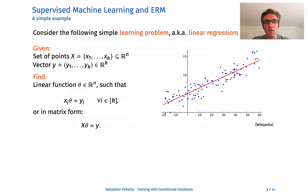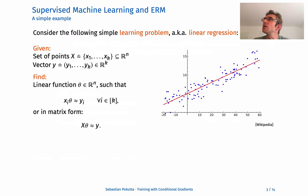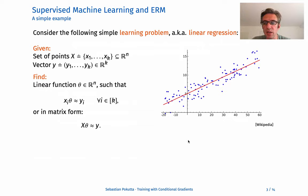Let's start with a very simple example in the context of supervised machine learning and empirical risk minimization. We consider a simple linear regression problem. Linear regression: given a set of points and certain response variables, we want to find a linear model — a hyperplane — that best explains those points. That's the red line passing through the blue points that you can see in the graphics.